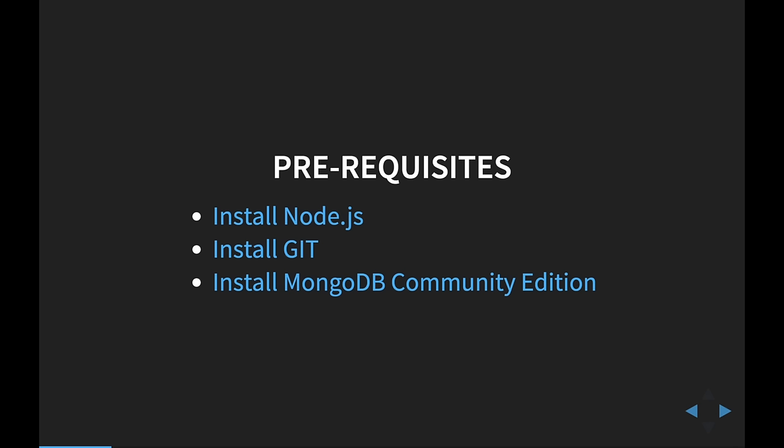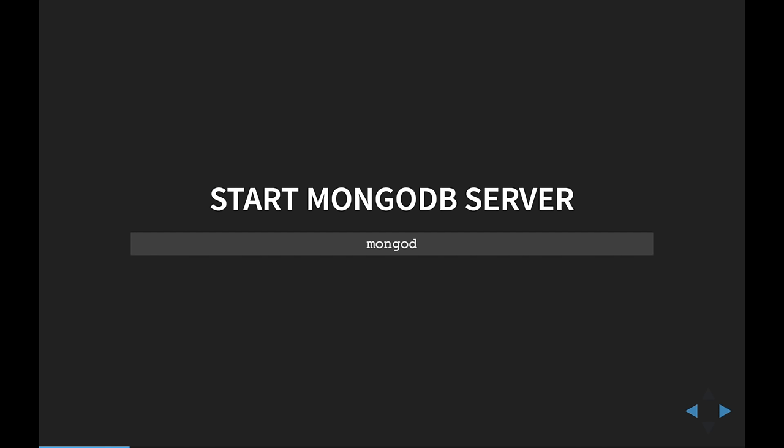There are a few prerequisites you need to have installed on your machine. The first one is Node.js. You'll also need to install Git so you can follow along with this presentation. MongoDB has a community edition that allows you to install it on your local machine. Once you install MongoDB, you need to start the server — it doesn't do this automatically. If you don't do this, you're going to be stuck from the very beginning. Make sure you run MongoDB and ensure your database is up and running before you follow along.